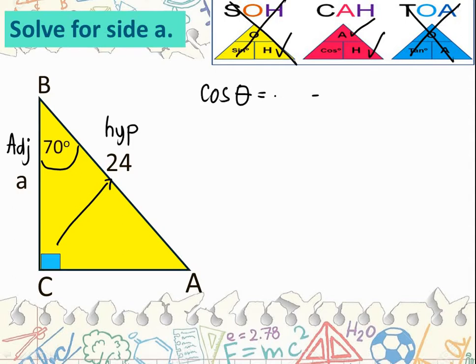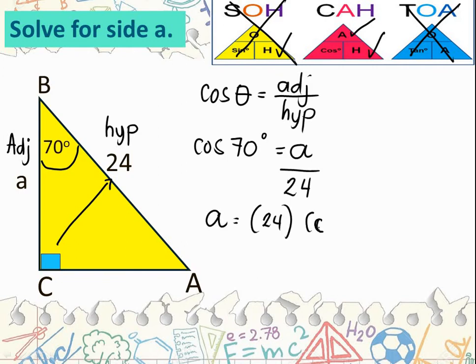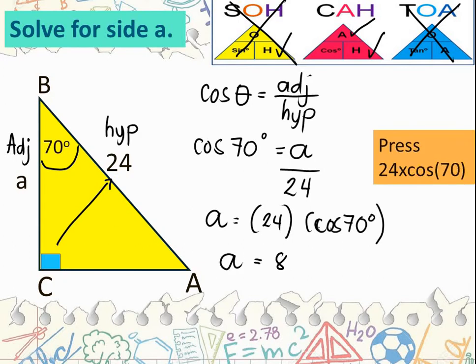Next, substitute the measurements. Theta is 70 degrees equals the adjacent side, which is unknown, represented by letter a, all over the hypotenuse which is 24 units. Take note, what's missing is the numerator, so the operation is multiplication. A equals 24 times cosine 70 degrees. How do we enter this in the calculator? A equals 8.208. Two decimal places, therefore the value of a is 8.21.